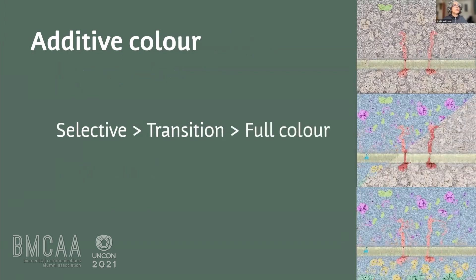We've also looked at color coding in more depth — for example, selective color coding versus a transition from selective to full color and then full color. We were looking at whether full color is too over-stimulating for students, or whether introducing color slowly through transition is a better approach. What we found was that viewers really interpret transition as change, so whereas we think of transition as bridging from one shot to another, it may be misinterpreted by the viewer.